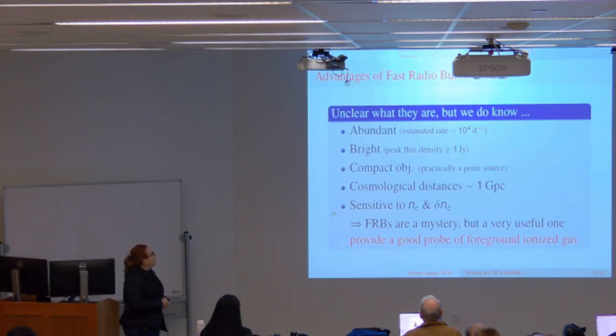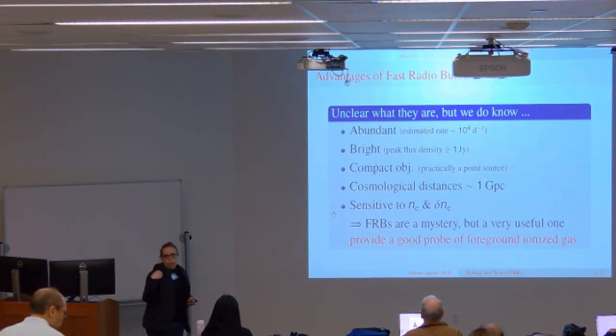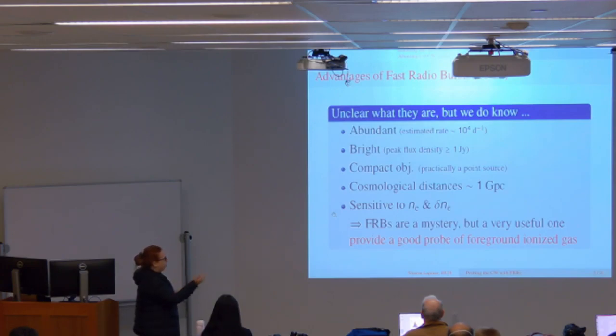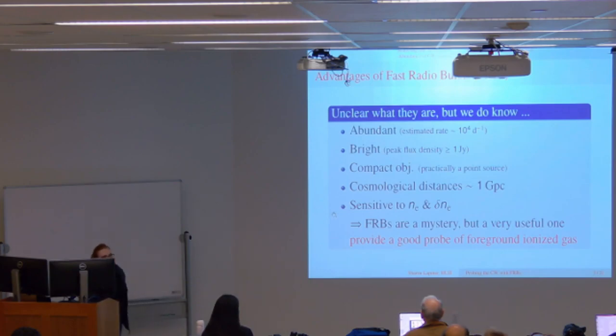So FRBs are very exciting. We don't really know what they are, but they have all these properties which make them very useful. They're abundant, they're very bright, they are very compact objects which is an important point for the scattering, and the fact that they come from cosmological distances means you can use them to explore all the ionized gas before them. This sensitivity depends on the dispersion measure, and this is related to the scattering time scale. They are very mysterious, but you can still use them.